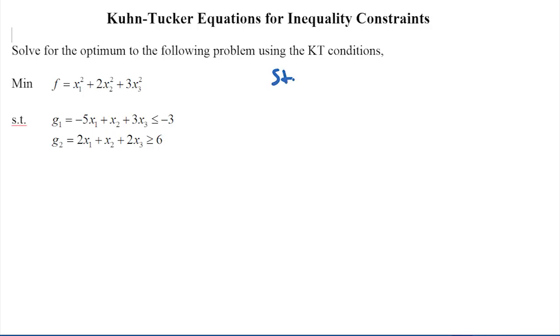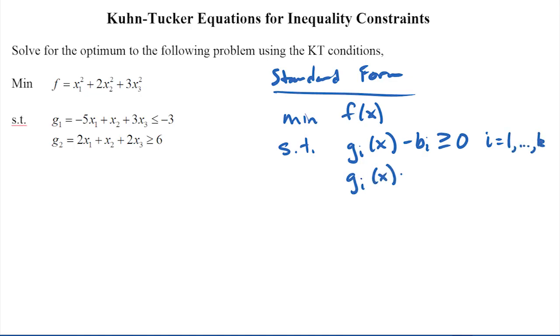The first thing I'm going to do is put this into standard form. So standard form is that I minimize an objective function f subject to some inequality constraints, and I'll write these as g_i(x) minus b, that's for i equals one to k, and then also equality constraints for g_i(x) minus b, that's k plus one to m.